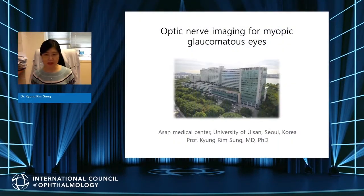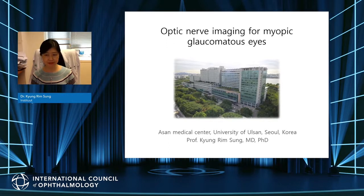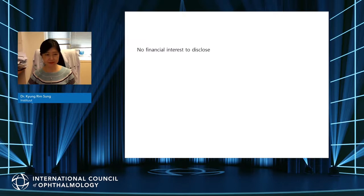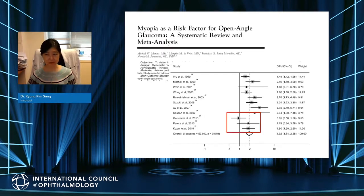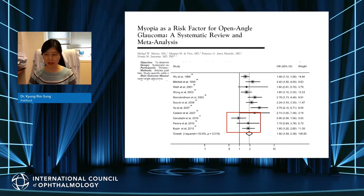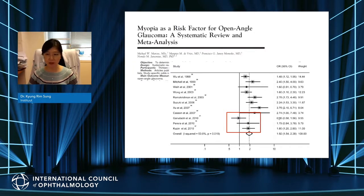Good afternoon everyone. I am Kyung Lim Sung, and today I'm going to speak about what we need to know about optic disc imaging in myopic glaucomatous eyes. Myopia is reported as a risk factor for development of primary open-angle glaucoma in many studies. We do not know exactly why, but myopia causes axial elongation, and subsequently the optic disc and retinal nerve fiber layer — which is the target of glaucomatous damage — is affected by such changes.